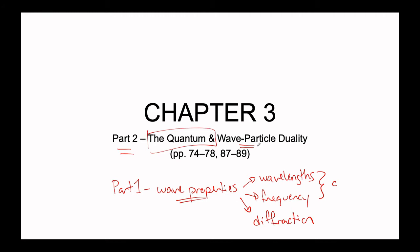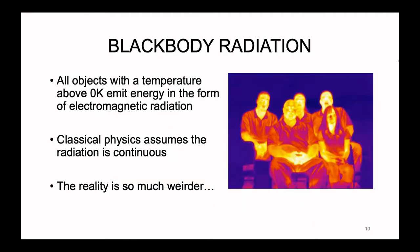So let's start talking about the quantum. What is the quantum? In order to understand the quantum, we first must understand what was being studied that led to its discovery. What was being studied was something called black body radiation — the observation that an object with a temperature above zero Kelvin gives off electromagnetic radiation, either in the form of light or heat or whatever form of electromagnetic radiation.